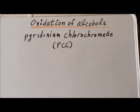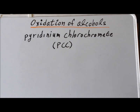When oxidizing primary alcohols in aqueous solution, there is a considerable danger of over-oxidation. In the process, we go from a primary alcohol to an aldehyde, but then oxidation continues and we have the formation of a carboxylic acid. If we want to stop the oxidation process at the aldehyde, we need to employ a specialized version of hexavalent chromium, chromium plus 6.